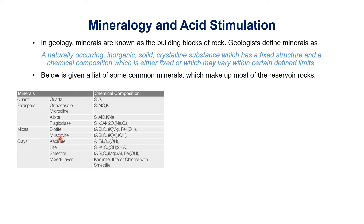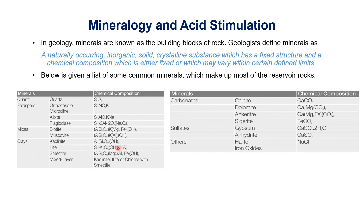Then we have micas, with different forms including biotite and muscovite. Then there are clays, and different forms of clays include kaolinite, illite, smectite, and other mixed layers. Other minerals commonly found in reservoir rocks include carbonates: calcite, dolomite, ankerite, and siderite. The most common carbonates are calcite (calcium carbonate, CaCO₃) and dolomite (calcium magnesium carbonate). We also have sulfates, which include gypsum and anhydrite, and other minerals like halite and iron oxides.